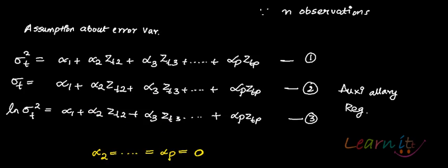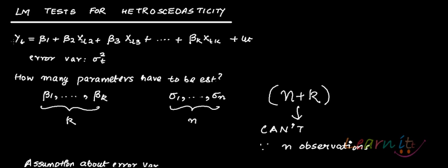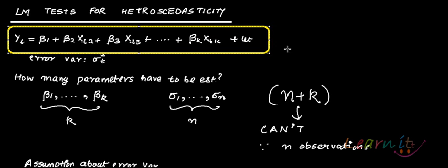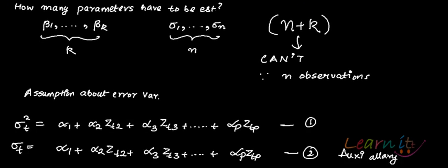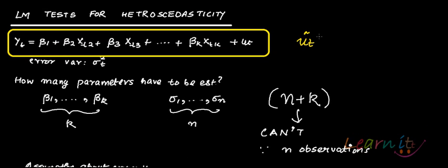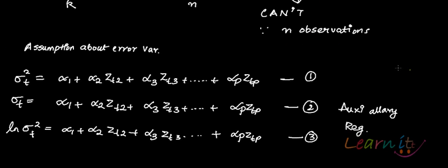The steps involved are: first, run the main regression. Once you run it, you get the estimates of the beta hats and the estimate of û_t. Note that from the main regression you can only get û_t — you cannot get sigma_t or sigma_t squared or log of sigma_t squared. At most you can get û_t squared, û_t, or log of û_t squared.